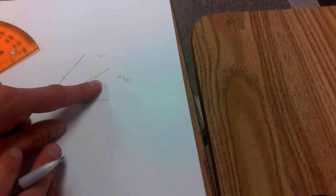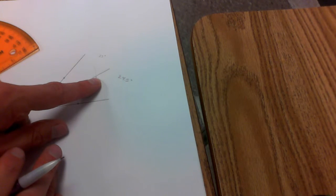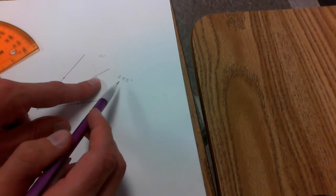So if I look at my construction, you'll see that the line that I drew doesn't exactly pass through the point of intersection. So I have a little bit of angle less on this side and a little bit more angle on this side.